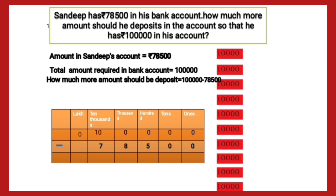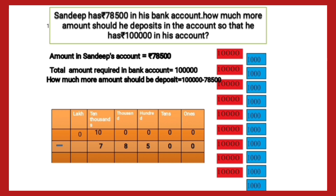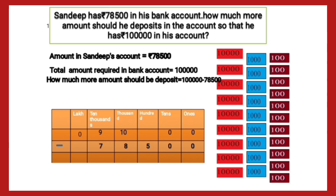At the thousands place we need one card of 10,000, which is changed into 1,000, giving us 10 cards of 1,000. At the ten thousands place we will then have only 9 cards. At thousands we have 10. Now we take borrow from thousands to make 10 at hundreds — 1 card of thousands makes 10 cards of hundreds. At thousands place we now have 9.